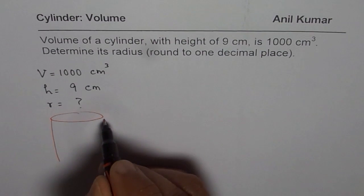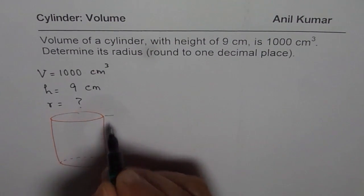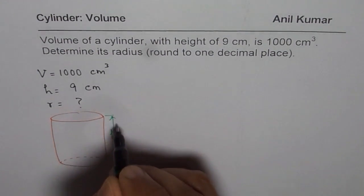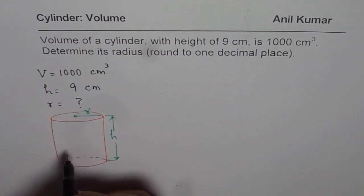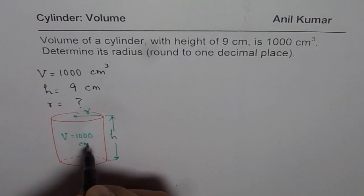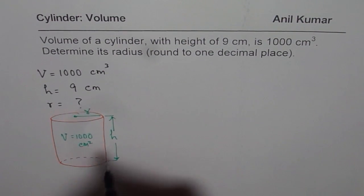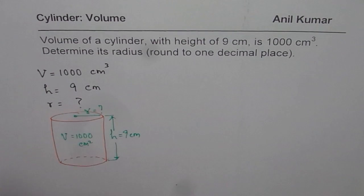So let me sketch one for you. Let's say this is the cylinder whose volume is given to us and this cylinder has height of h, radius of r and volume of 1000. Units are centimeters square. Height h is 9 cm. So we need to find what radius is.